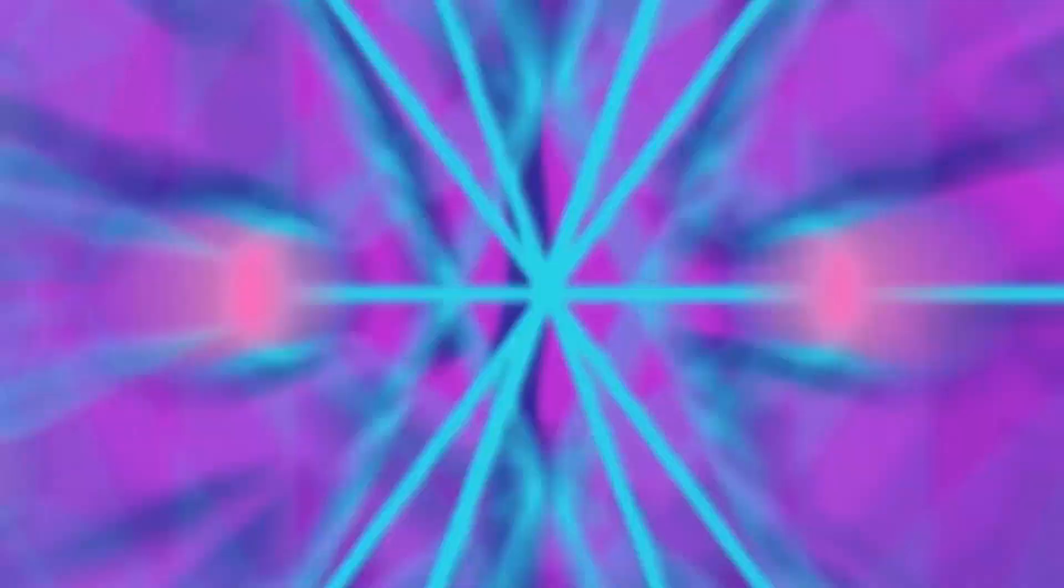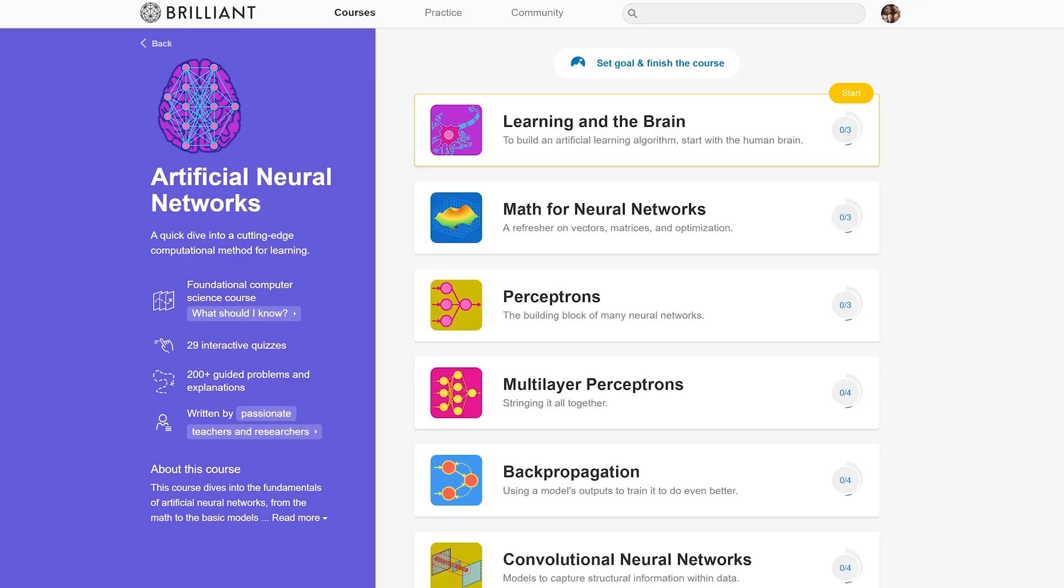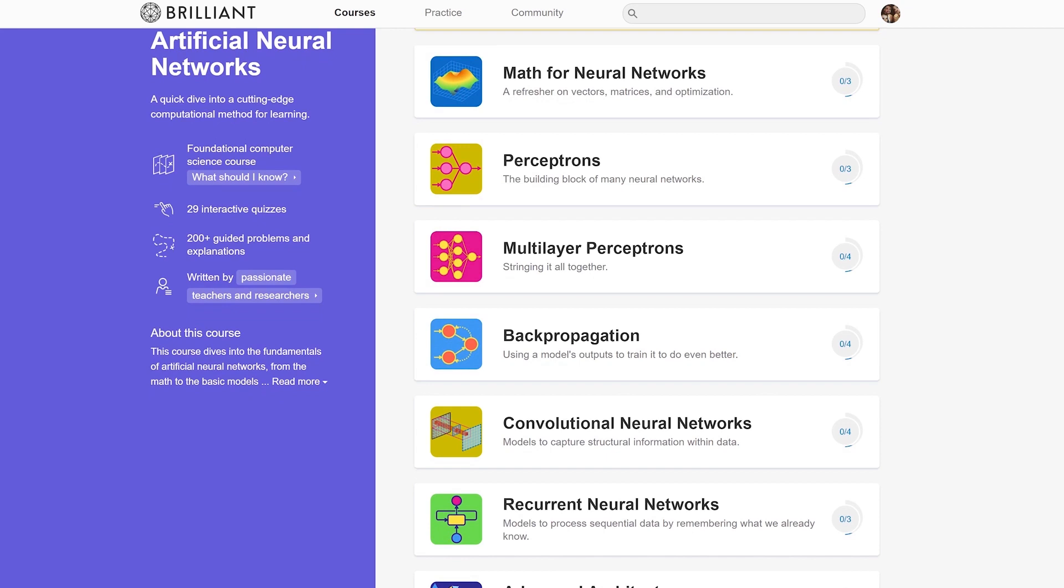In this course you will dive into the fundamentals of artificial neural networks. As you progress through each section, your learning is tested and reinforced by answering fun questions. If you answer something incorrectly, it does not impede your progress. Instead, Brilliant allows you to check the solution and explanation, so you can correct your misconceptions and carry on learning.